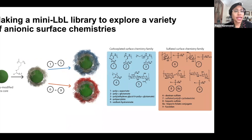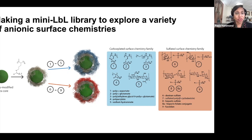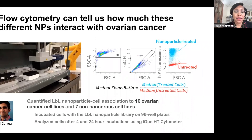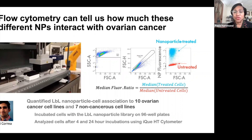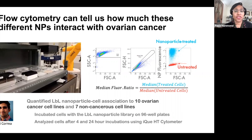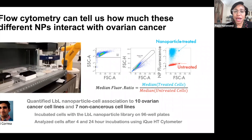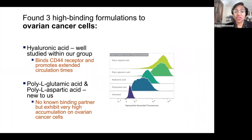We've continued to look at how we can use siRNA in our systems to address ovarian cancer. We've also been interested in designing nanoparticles with high affinity for ovarian cancer cells, so we decided to expand our library. We know hyaluronic acid is interesting, but what other outer layers may give us high affinity for ovarian cancer cells? We looked at a systematic study examining the association of nanoparticles with different outer layers — some sulfated and some with carboxylated outer layers — comparing their association with 10 ovarian cancer cell lines and 7 healthy cell lines.